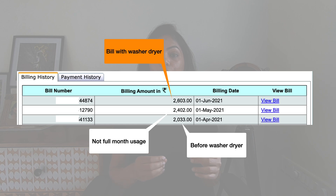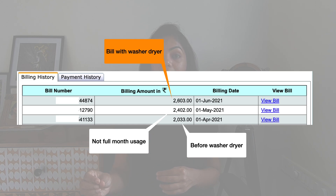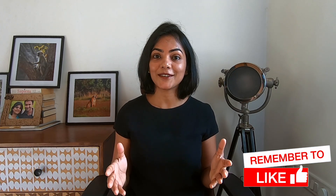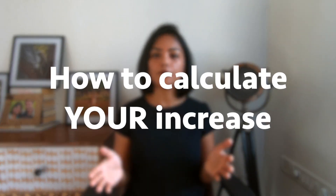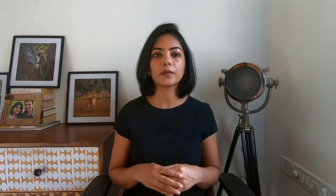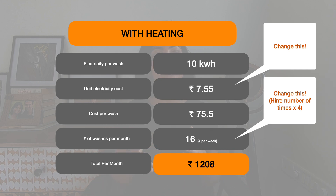This is similar to the electricity increase that I have seen in my bill — I used to get a bill of about 2,000 rupees earlier and now it's gone up to about 2,500 to 2,600. So this calculation actually works. To calculate for yourself, assuming you're using the Samsung washer dryer, just replace the unit electricity cost you see on the screen with the unit electricity cost of your area, and also replace the number of washes to get an approximate amount of how much your bill is going to go up.